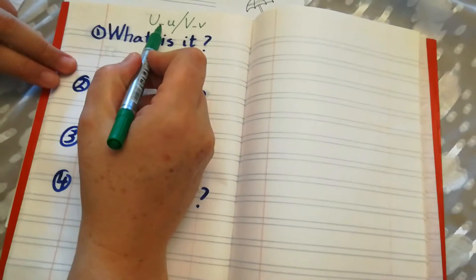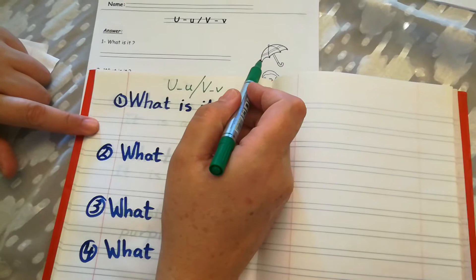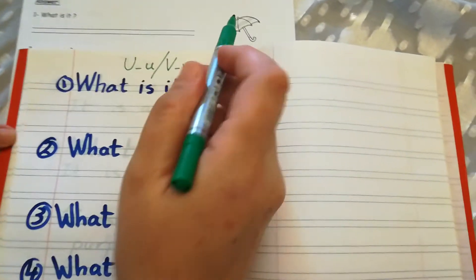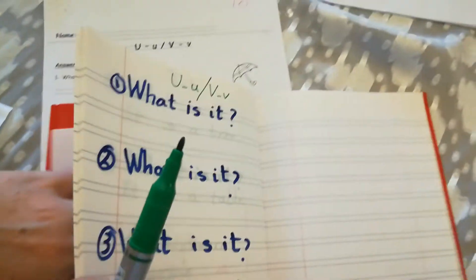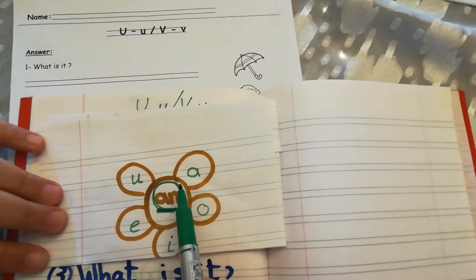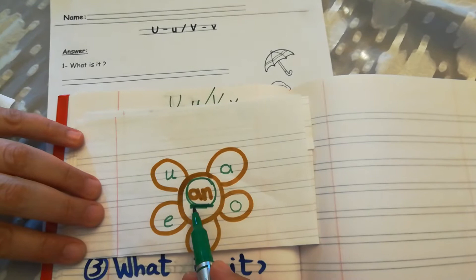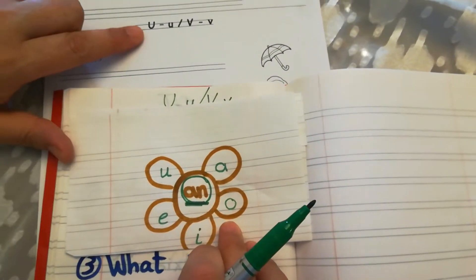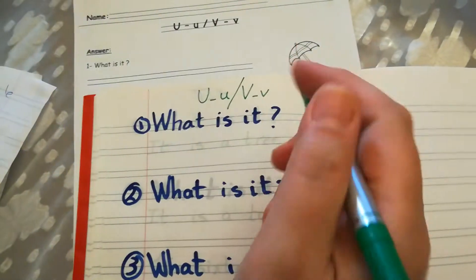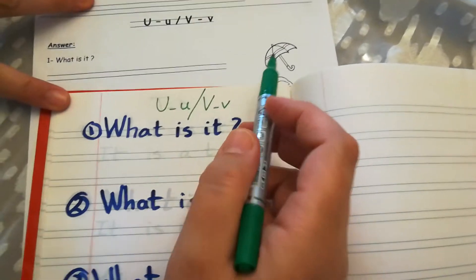Sound of letter U. Number one, what is it? Umbrella. It is an umbrella. Do you remember our vowel letters? Any words that begin with letter A, O, I, E, U — we must put 'an.' So we have letter U and we are going to put 'an.' It is an umbrella.